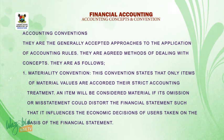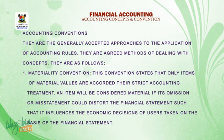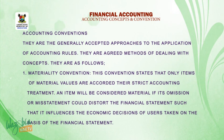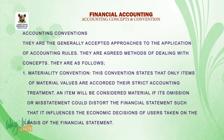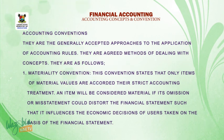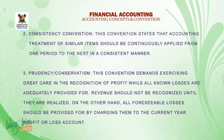Number one, materiality convention. This convention states that only items of material value are accorded their strict accounting treatment. An item would be considered material if its omission or misstatement could distort the financial statement such that it influences the economic decision of users taken on the basis of the financial statement.